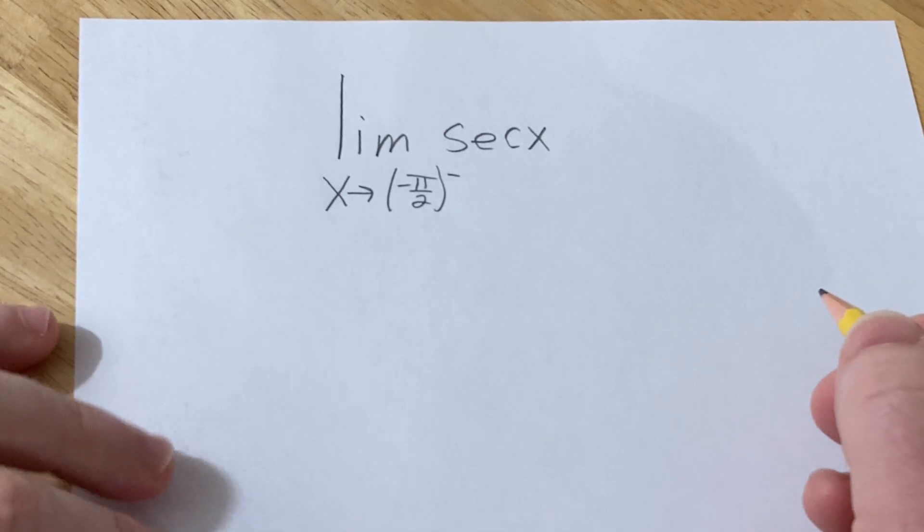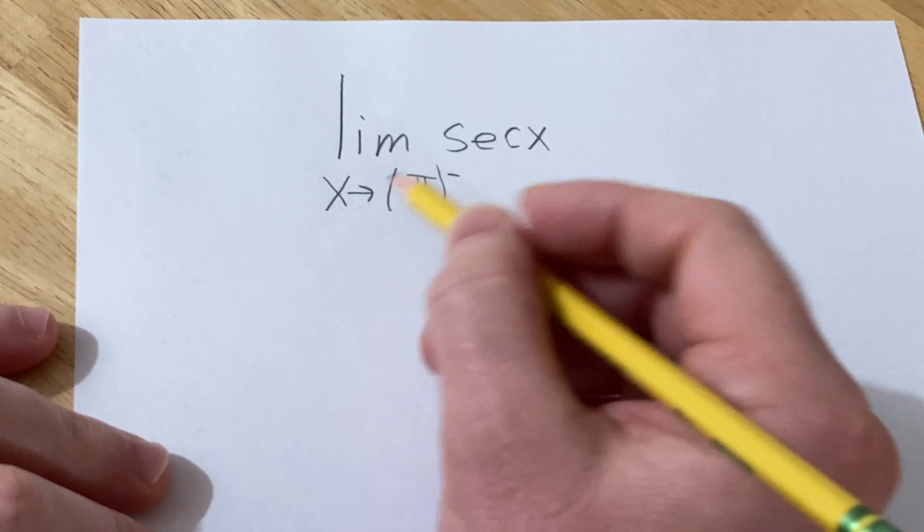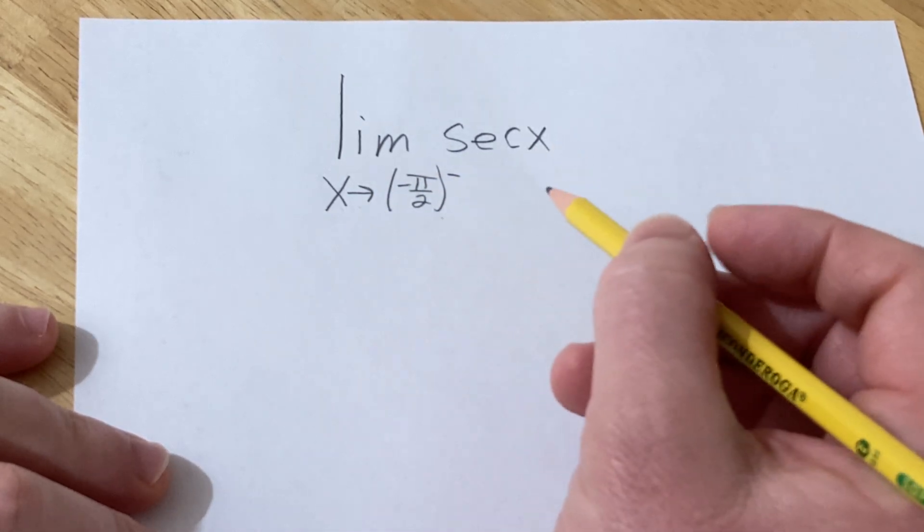Hello, in this video we're going to evaluate this limit. We have the limit as x approaches negative pi over 2 from the left of secant of x.